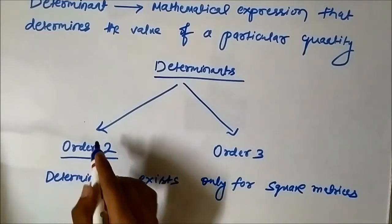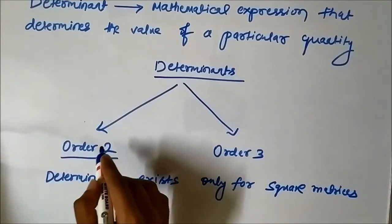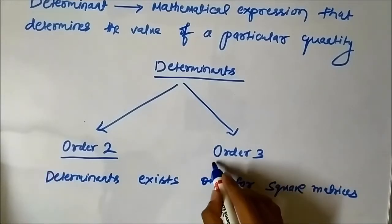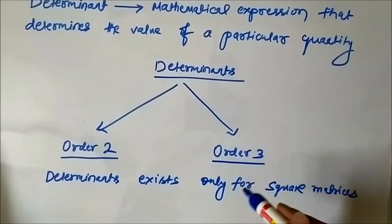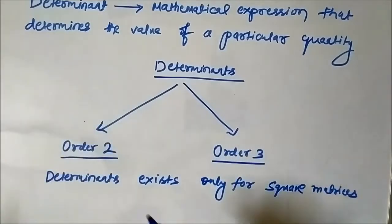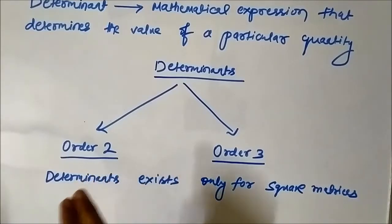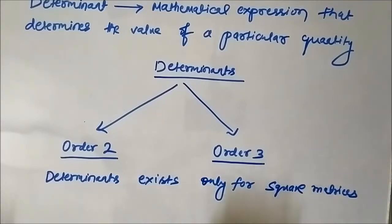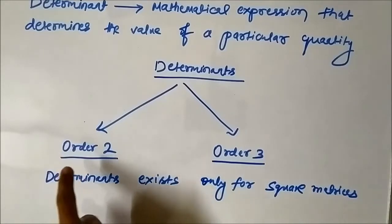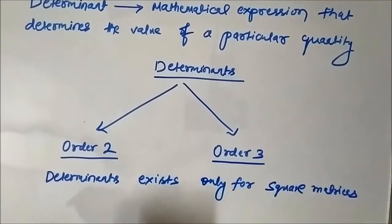Order two means a square matrix of order two — it has two rows and two columns. Order three means a square matrix of order three having three rows and three columns. Mostly we have to deal with these two types of determinants, and almost every exam question comes from these two types, because higher-order determinants are very difficult, lengthy, and time-consuming to solve.